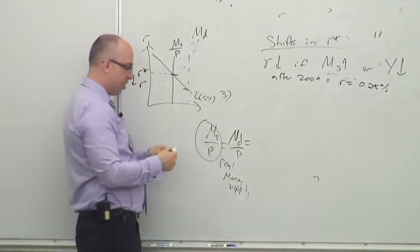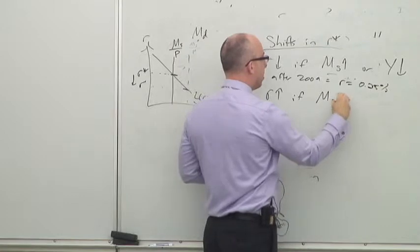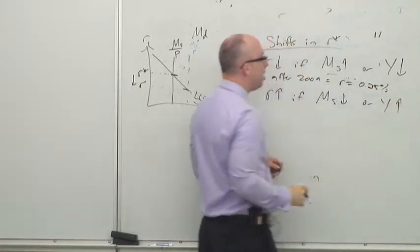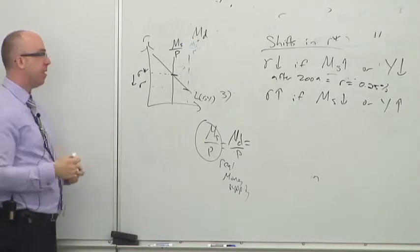Now it goes the other direction. Interest rates go up if the money supply goes down or if Y goes up. So an improving economy should raise interest rates without any central bank acting.